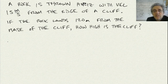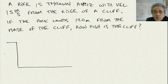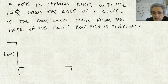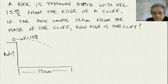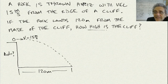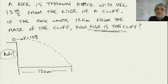Let's draw a picture first. Here is the cliff — we don't know its height — but the rock has an initial velocity of 15 meters per second and lands 120 meters from the base. We're asking: what is the height of the cliff, delta d vertical? Go ahead and pause the video now and see if you can solve this.